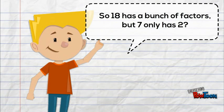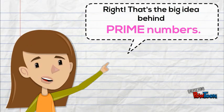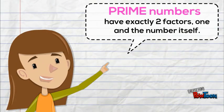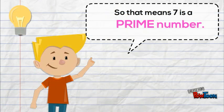So, 18 has a bunch of factors, but 7 only has 2? Right! That's the big idea behind prime numbers. Prime numbers have exactly 2 factors: 1 and the number itself. That means 7 is a prime number.